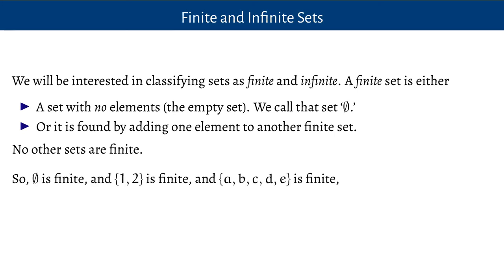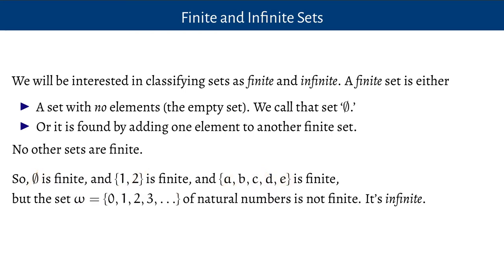So the empty set is finite, and a set just containing one and two is finite because I've just added one to the empty set and then added two to that set. The set containing just A, B, C, D and E is finite. But the set of natural numbers containing 0, 1, 2, 3, 4, 5, 6, 7 and all of the whole counting numbers — the set that we call Omega — is not finite; it's infinite.